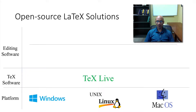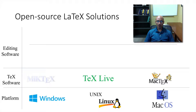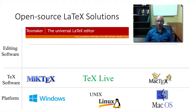TeX Live is the text software that you can get for Unix and Linux. It's actually the same as what you get for Mac, but MacTeX provides some extra Mac-specific tools. Similarly, MiKTeX is the Windows version of TeX Live, and it adds an editor. TeXMaker is a universal cross-platform editor.